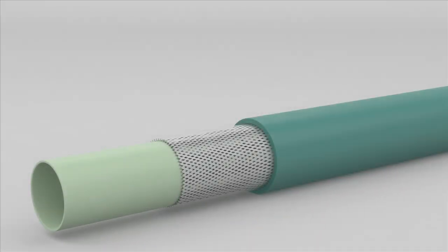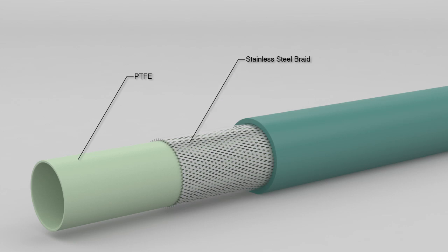Conventional guide catheter shafts are constructed with three distinct layers. A PTFE inner layer provides lubricity to facilitate device passage. A stainless steel braided layer enhances torque transmission and shaft support. A thermoplastic outer layer provides a smooth surface against the blood vessel wall.